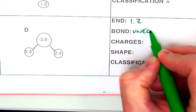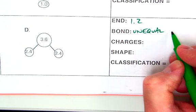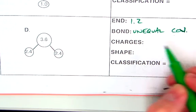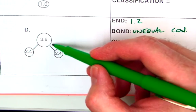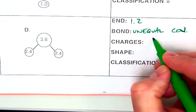And again, looking on our continuum, on our electronegativity periodic table, it's going to be unequal covalent bonds. The electrons are going to be shared unequally between those two atoms. Again, we're going to have partial charges.